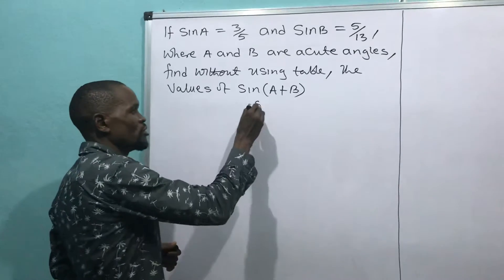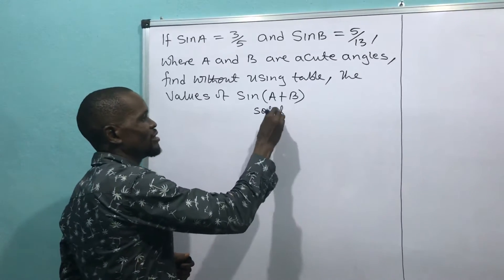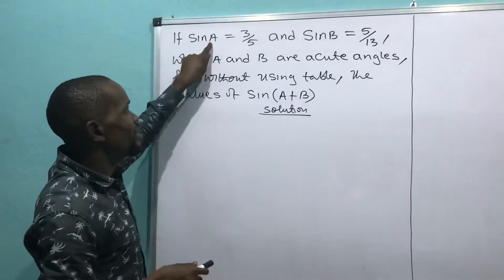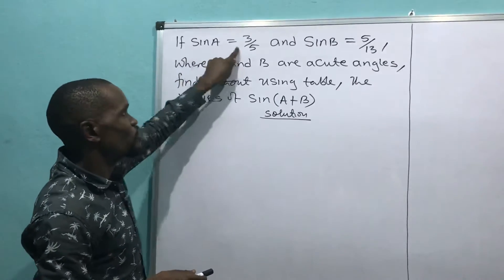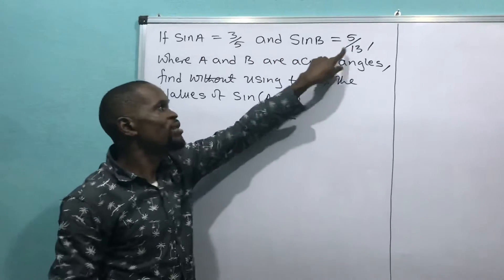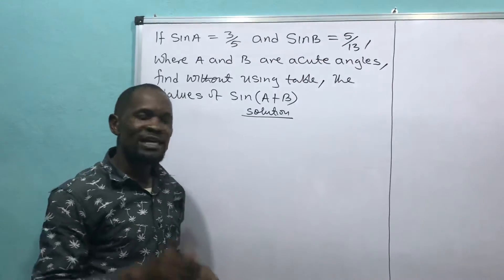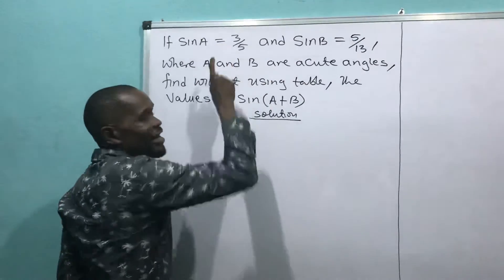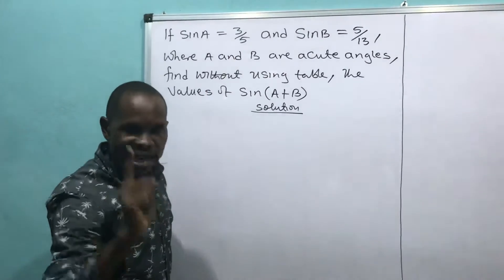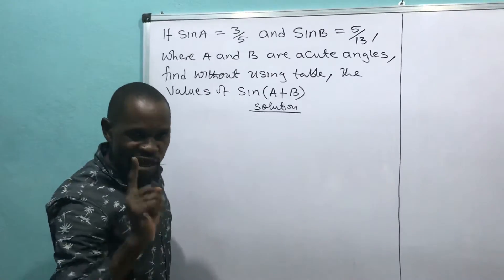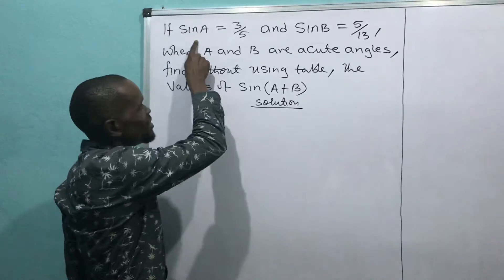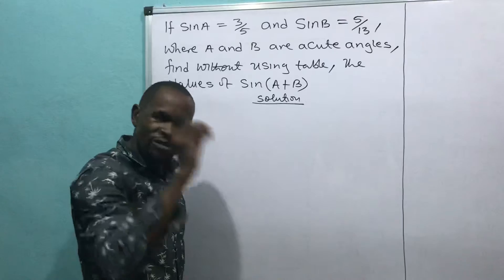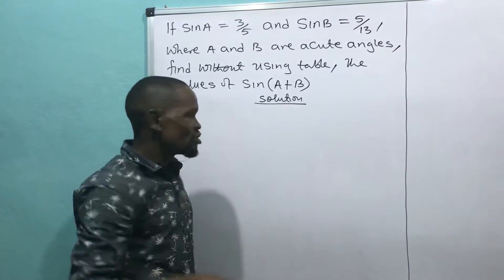Now, to the solution. For us to have sin A equal to 3/5 and sin B equal to 5/13, it means that these two angles are found in different right-angle triangles. Both A and B are each found in a separate right-angle triangle.